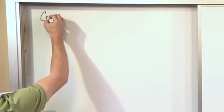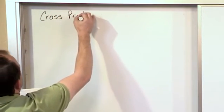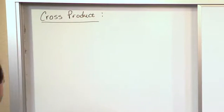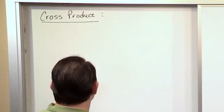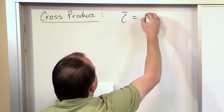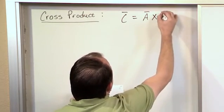Alright, so the cross product of two vectors. We've already talked about the dot product a long time ago, and the complement to that is the cross product. We say vector C is equal to the cross product of vector A times vector B.